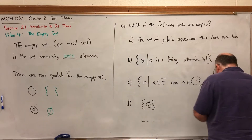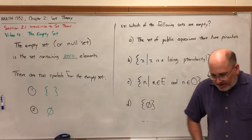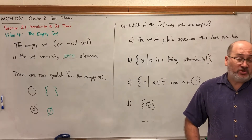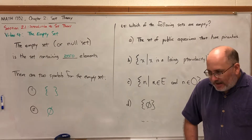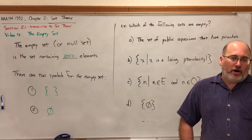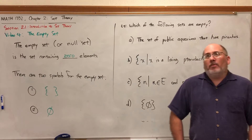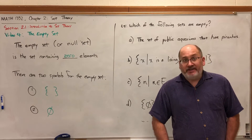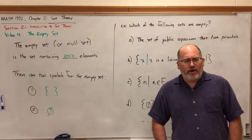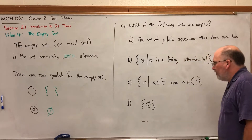One reason we need a symbol for the Empty Set, for theoretical purposes, is what's called completion. We need to be able to represent the answers to some set problems — answers where the set is empty. It's kind of like why we have the number zero: to represent the absence of quantity, among other things.